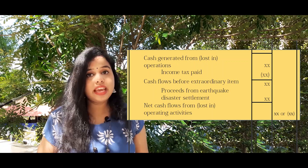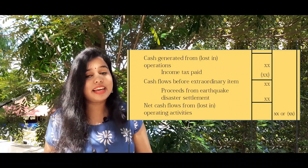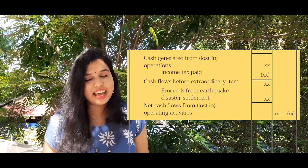The result is cash flows from operating activities. If negative, it is a loss in operating activities. To summarize: N is net profit after tax, then add IDTP to get net profit before tax, apply adjustments using ID LID GOA, get operating profit/loss before working capital changes, apply current asset and liability changes, get cash generated from operations, minus income tax, get cash flows before extraordinary items, add proceeds from earthquake/disaster settlement, and the total is cash flow from operating activities.